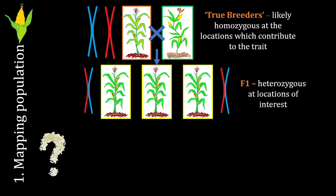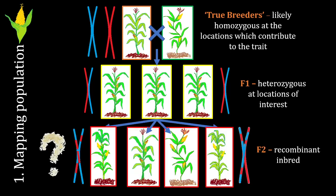We then mate these individuals, generating what we call an F1 generation. These plants are likely to be heterozygotes at the critical loci relating to the trait. Finally, we inbreed the F1 generation and create the recombinant inbred line F2 population. This becomes your mapping population — these are the plants which we will phenotype.